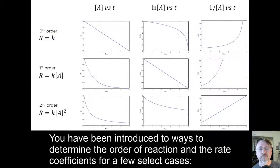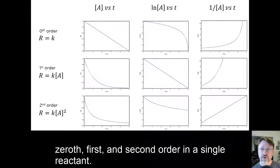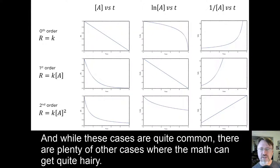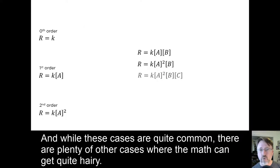You've been introduced to ways to determine the order of reaction and the rate coefficients for a few select cases: 0th, 1st, and 2nd order in a single reactant. And while these cases are quite common, there are plenty of other cases where the math can get quite hairy.